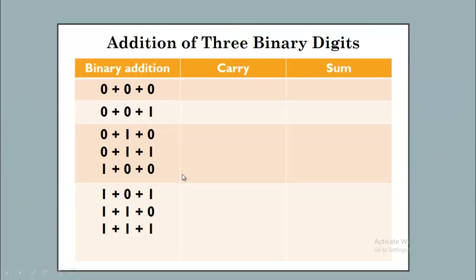Next, addition of three binary digits. Zero plus zero plus zero gives zero sum and zero carry. Zero plus zero plus one gives one sum and zero carry. Zero plus one plus one gives zero sum and one carry. One plus one plus one gives three — binary of three is one-one, so one sum and one carry. You can try the remaining combinations by yourself.